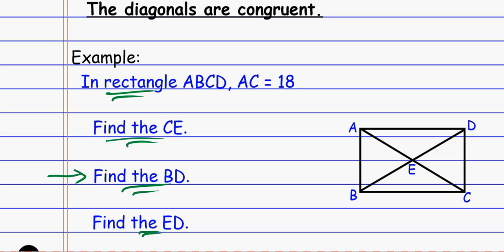One of the easiest ones to start with is finding BD. I already know one of the diagonals is 18. So this entire diagonal is 18. Since it's a rectangle, the diagonals have to be the same, which means the other diagonal BD also has to be 18. So right away, BD is 18.